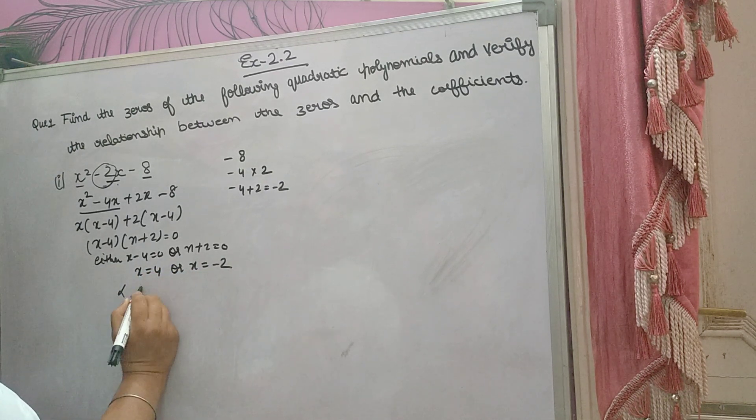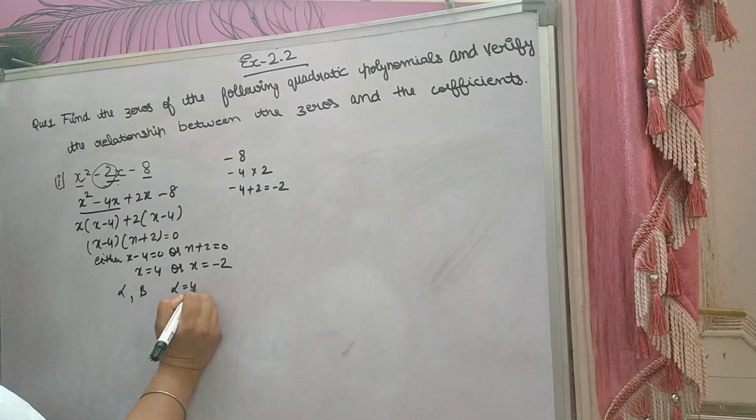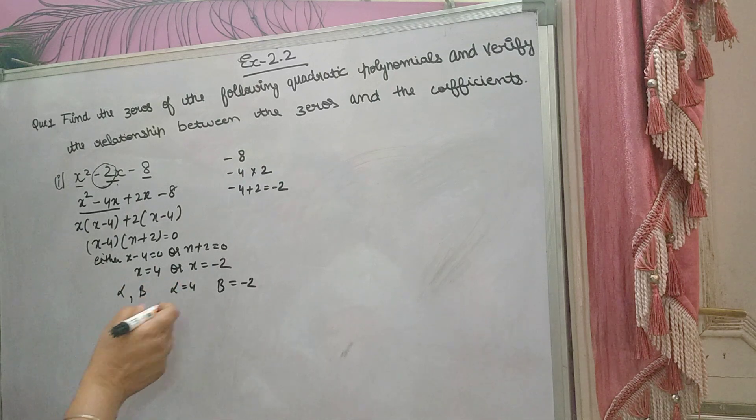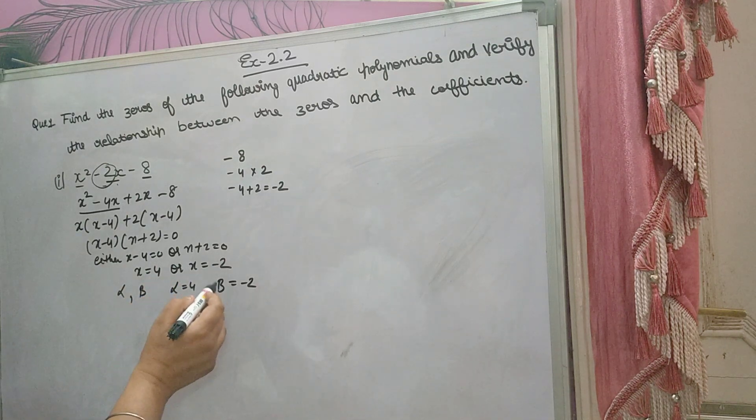If alpha and beta are the zeros, you will get alpha is equal to 4, suppose, and beta is equal to minus 2. So you can take opposite also, reverse also. Let alpha be minus 2 and beta be 4.